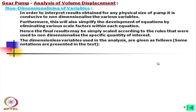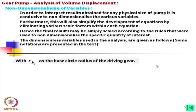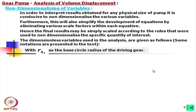The dimensionless variables used in the analysis are given as follows. For linear parameters, we have considered the reference parameter as the base circle radius of the driving gear. Once the gears — say involute gears — are defined by the module, number of teeth, and pressure angle, one dimension of that gear will be fixed. Normally people think the pitch circle is the fixed dimension, but it is not.